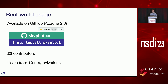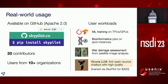In terms of real-world usage, we open-sourced the system last year on GitHub. We have about 20 contributors and users from more than 10 organizations and growing. We see users doing ML training and bioinformatics workloads. Interestingly, some users also built a war damage assessment tool — analyzing which buildings in Ukraine were damaged during the war — using SkyPilot to launch these heavy computations. Recently, we also released the Vicuna large language model, the first open-source chatbot with high quality, which was trained using SkyPilot on the cloud.